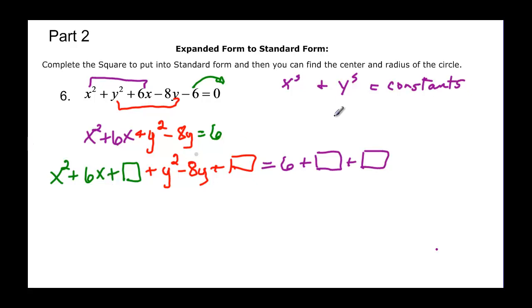So how do I know what goes in the box? Well inside the box is really going to be equal to half of the middle term squared, or b over 2 squared. And then we need to figure out what that is.